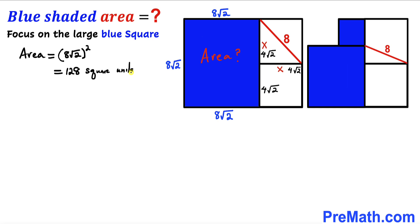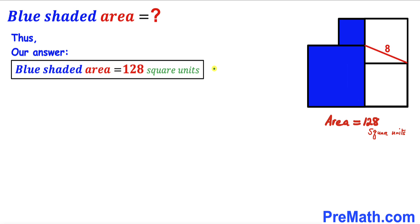Thus, after all the calculations and manipulations, the area of this blue shaded region turns out to be 128 square units. That's our final answer.